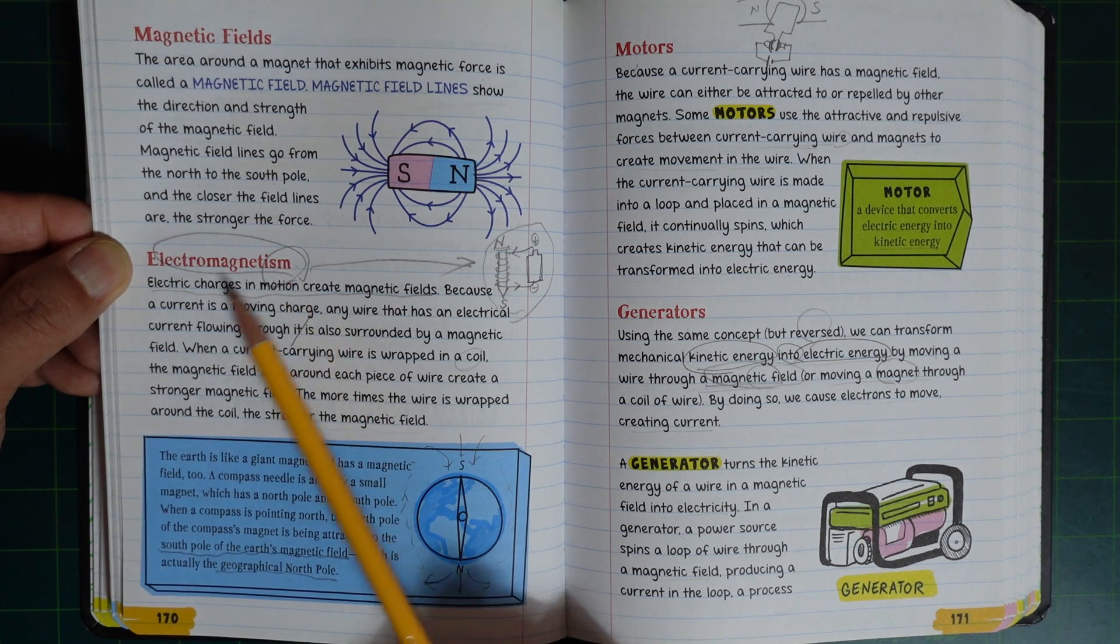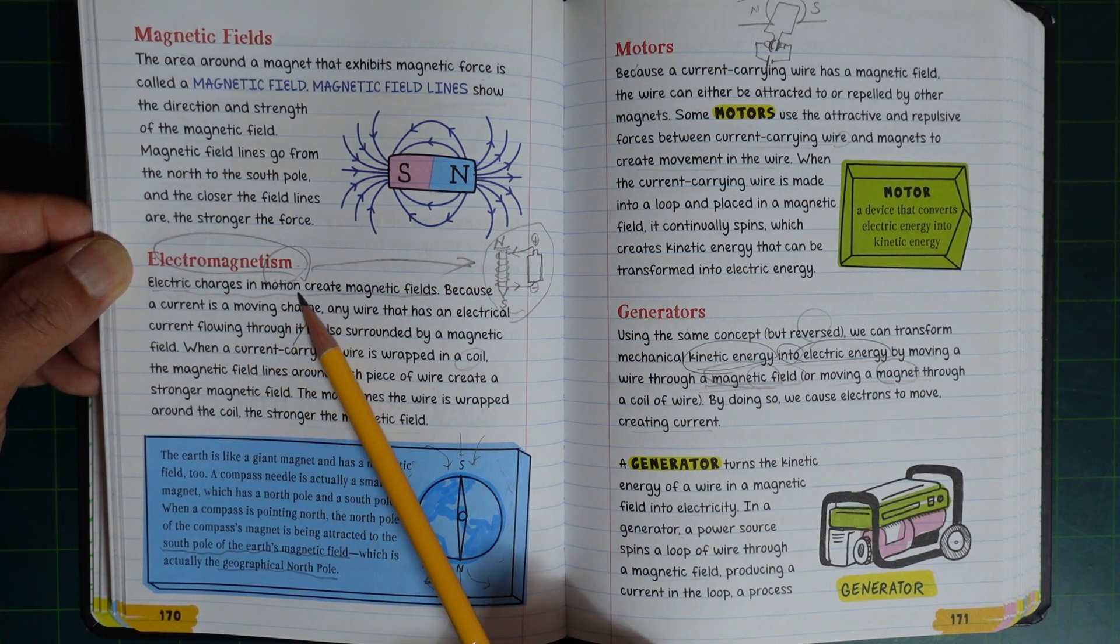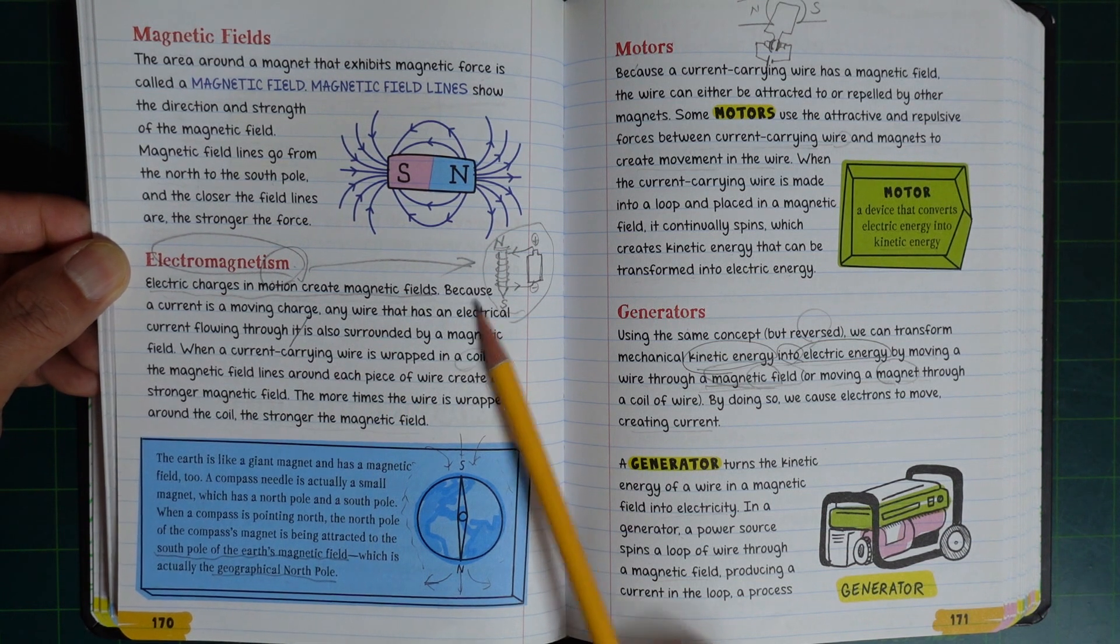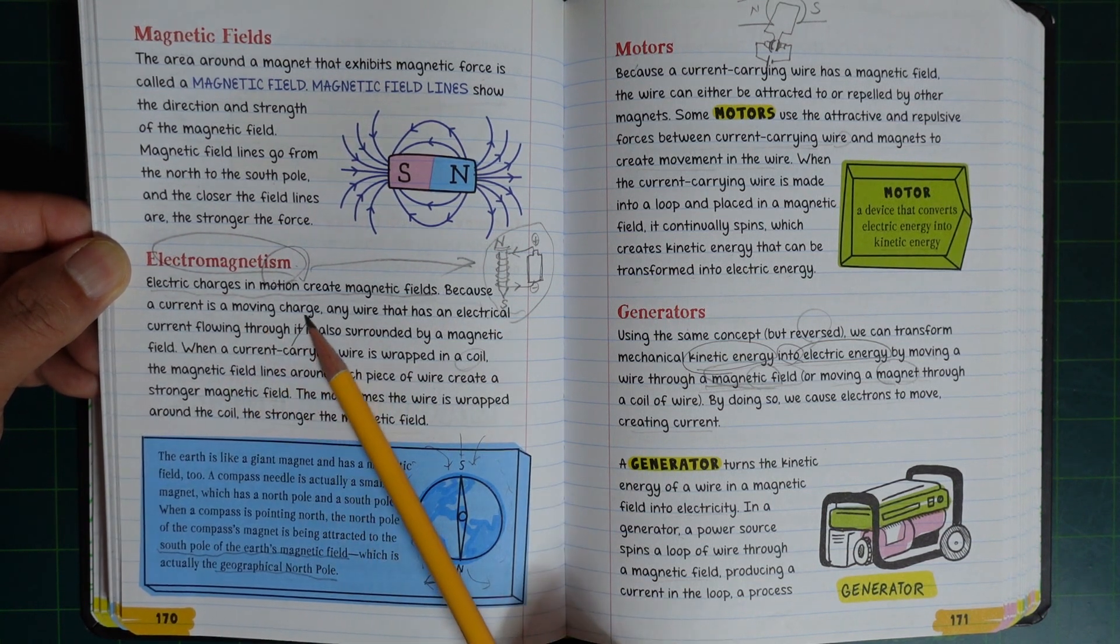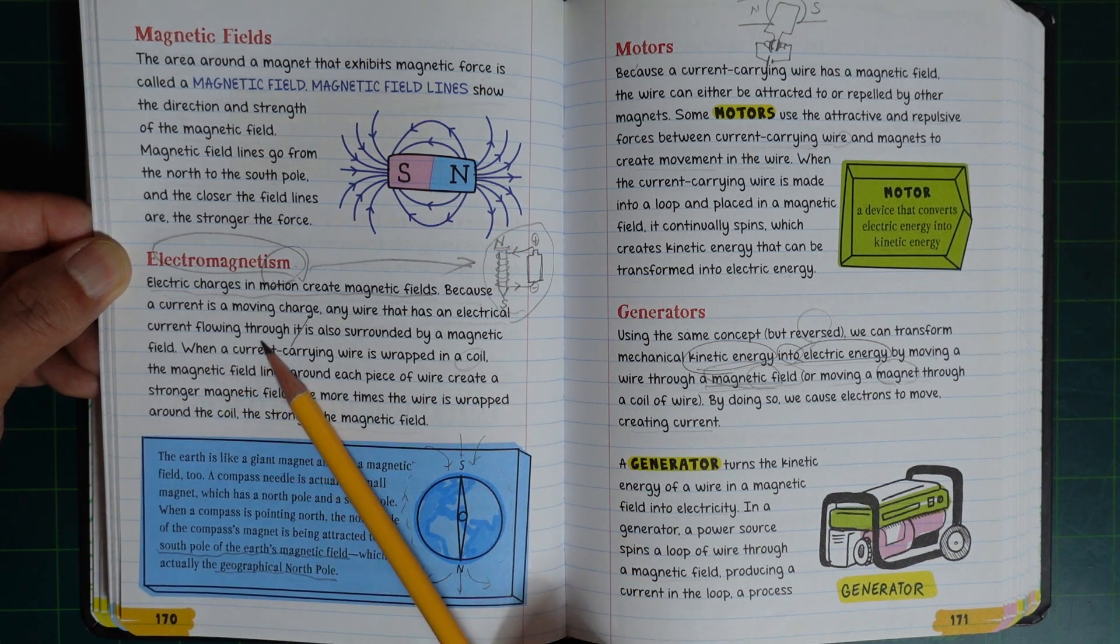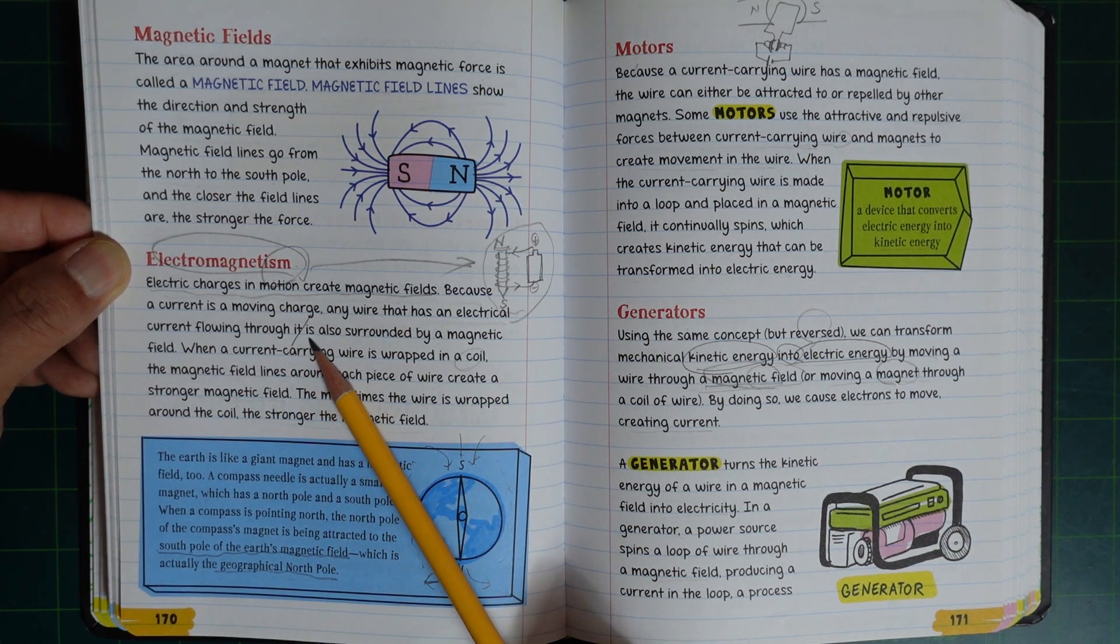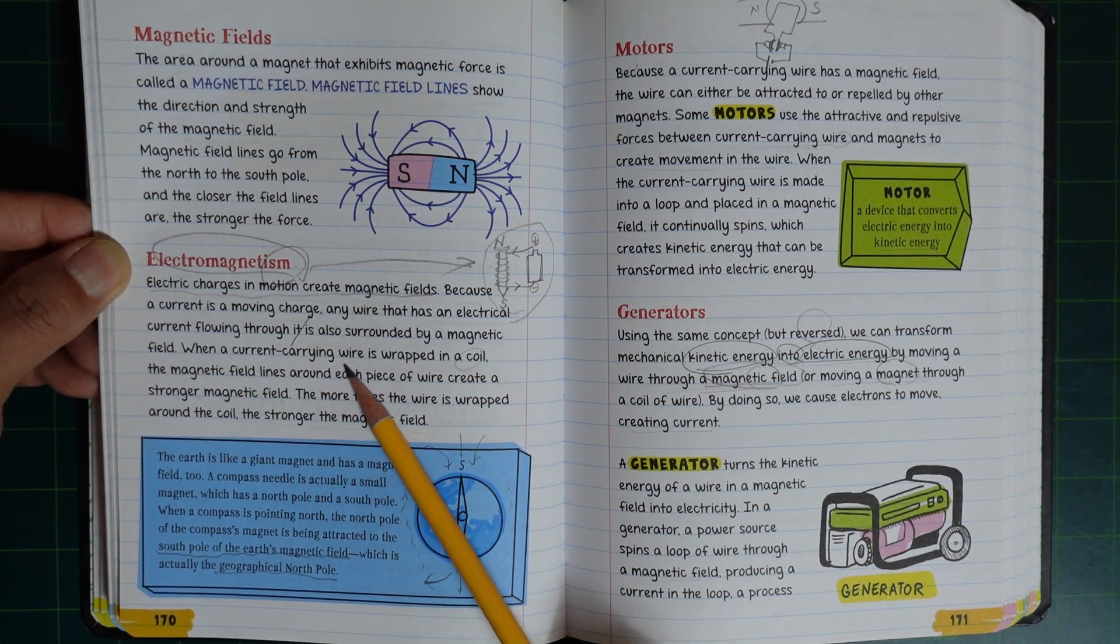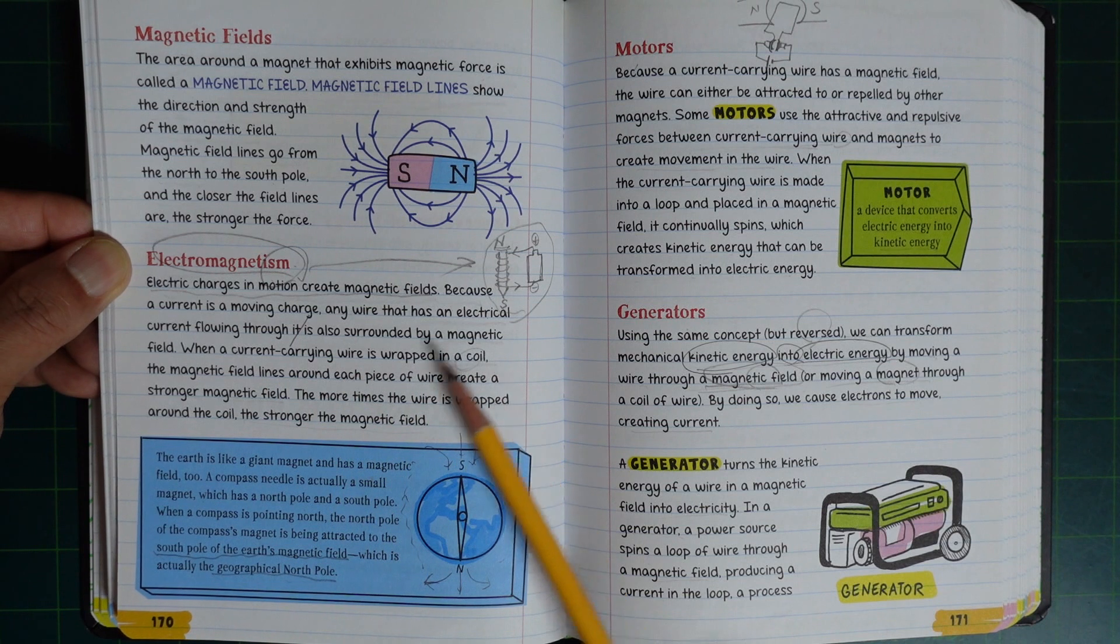Electric charge in motion creates magnetic fields. Because a current is a moving charge, a wire that has electrical current flowing through it is also surrounded by a magnetic field. When a current-carrying wire is wrapped in a coil, the magnetic field lines around each piece of wire create a stronger magnetic field.